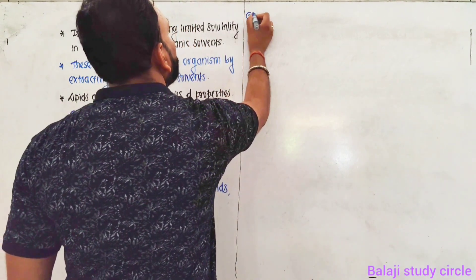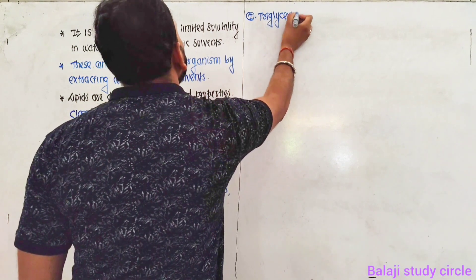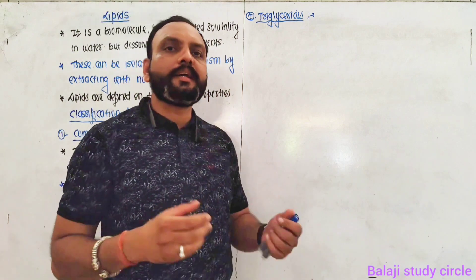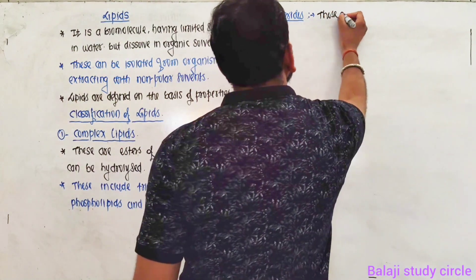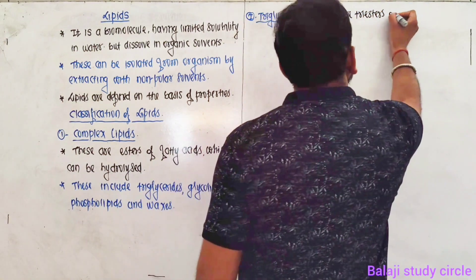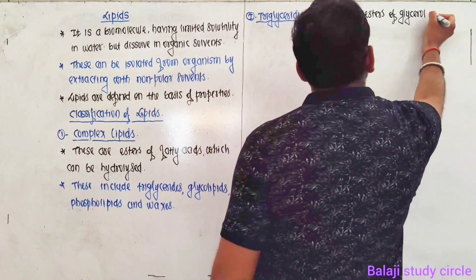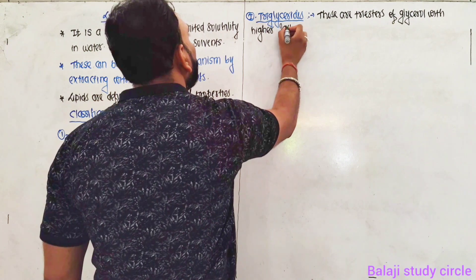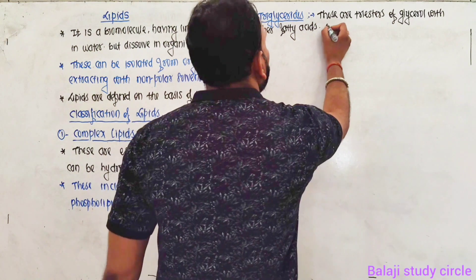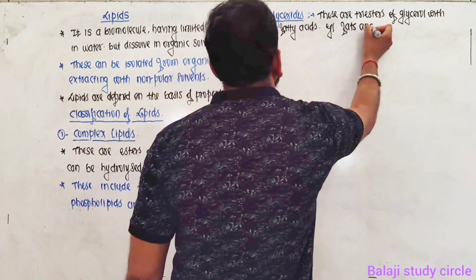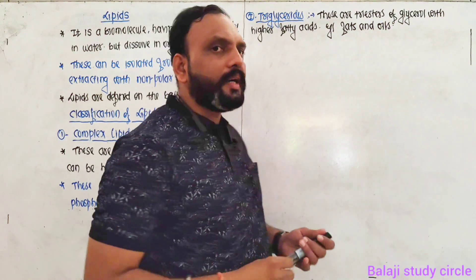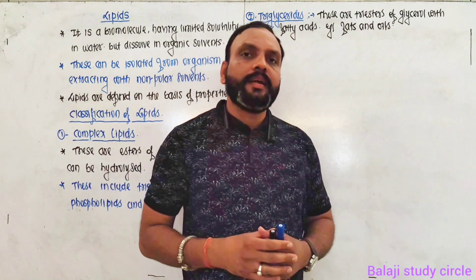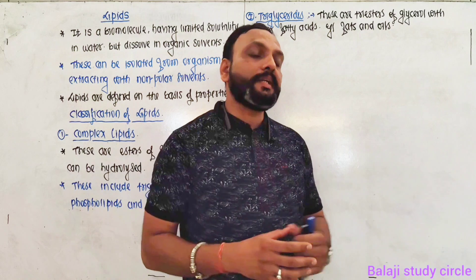Let's discuss triglycerides. Triglycerides are the triesters of glycerol with higher fatty acids. Examples are fats and oils. Fats are the triesters of glycerol with saturated fatty acids — for example, glycerol tristearate.